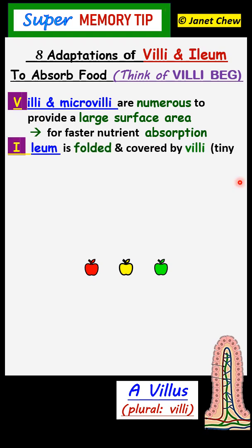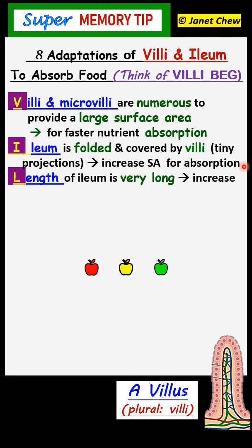I stands for Helium. The Helium itself is folded and covered by the Vili or tiny projections to increase the surface area again for absorption. SA stands for surface area, spelled in food.